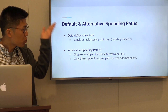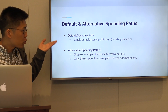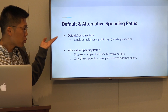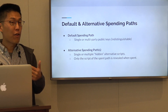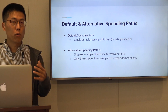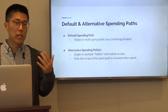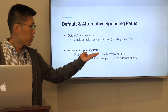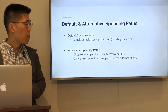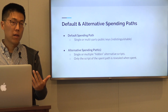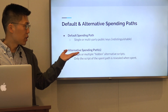Taproot also provides us with alternative spending paths. These alternative spending paths have hidden scripts, so we can encode these locking conditions with Bitcoin script, but they are not revealed unless we spend these explicitly.